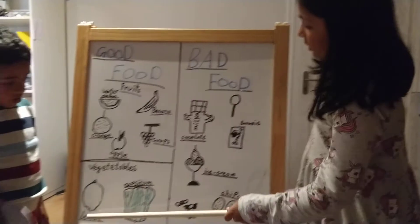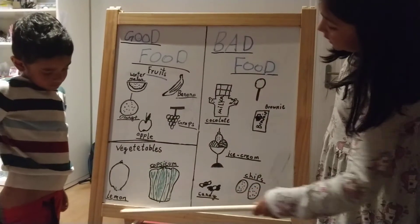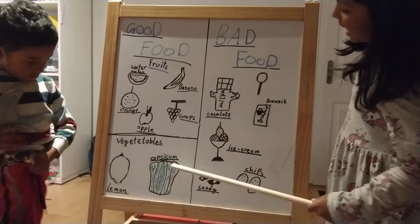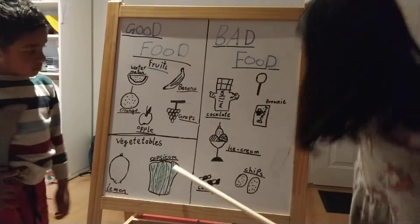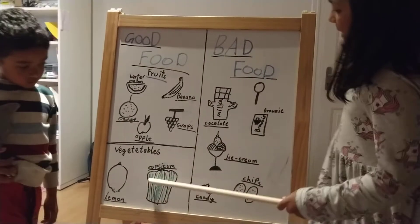Now the vegetables — you can see I named it — is lemon and capsicum.